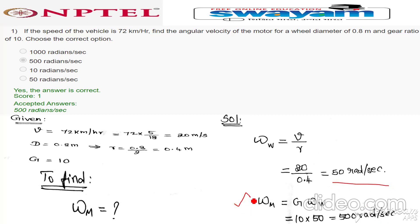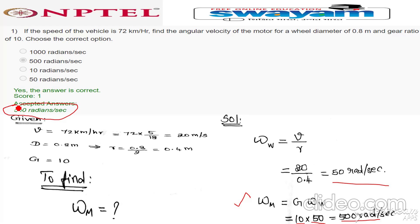We know the formula: the relation between angular velocity of wheel and angular velocity of motor. Angular velocity of motor is equal to g into angular velocity of wheel. g is given as 10, multiplied with angular velocity of wheel which is 50. So 10 into 50 gives 500 radian per second. This is the answer for the first question.